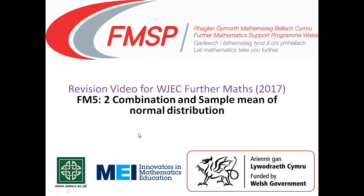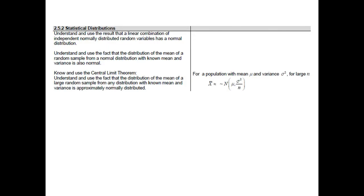The syllabus asks us to discuss the distribution of a linear combination of independent normally distributed random variables, the distribution of a sample mean from a normal distribution with known mean and variance, and then the central limit theorem — to use the fact that the distribution of the mean of a large random sample from any distribution with known mean and variance is approximately normally distributed.